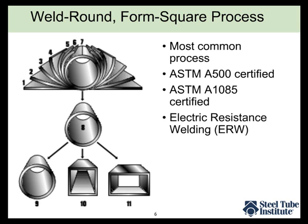Once you have the round section, it can remain round and go through further forming to make it straight and cut to length, or it can be formed through more rollers into square or rectangular shapes. So you're getting steel that starts as one flat piece, gets cold worked into a circle, welded, and then possibly worked again to produce the corners and flat sides.